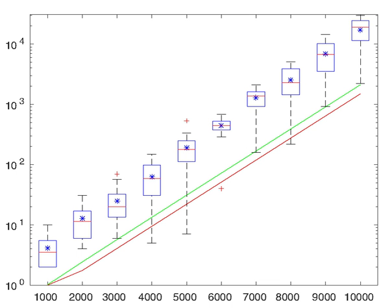== Proof that every vector space has a basis == Let V be any vector space over some field F. Let X be the set of all linearly independent subsets of V. The set X is nonempty since the empty set is an independent subset of V, and it is partially ordered by inclusion. Let Y be a subset of X that is totally ordered by inclusion, and let Lᵢ be the union of all elements of Y, which are themselves subsets of V. Since Y is totally ordered, every finite subset of Lᵢ is a subset of some element of Y, which is linearly independent, and hence every finite subset of Lᵢ is linearly independent. Thus Lᵢ is linearly independent, so Lᵢ is an element of X, and therefore Lᵢ is an upper bound for Y in X.